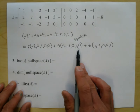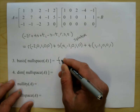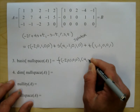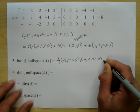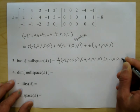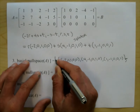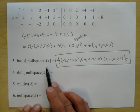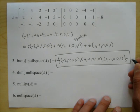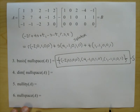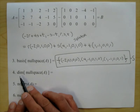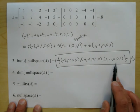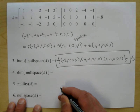The basis is those three vectors: negative 2, 0, 1, 0, 0; then 4, negative 1, 0, 1, 0; and 1, negative 1, 0, 0, 1. I'll call this set S. The dimension of the null space is 3, since we count the number of elements in any basis.